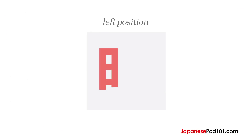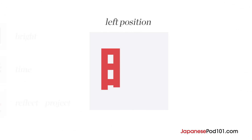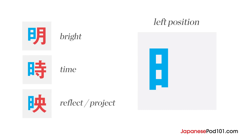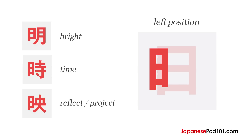The day radical will usually appear in the left position, as seen in the original examples for bright, time, and reflect or project. When the day radical is part of another kanji character, it shrinks in size.